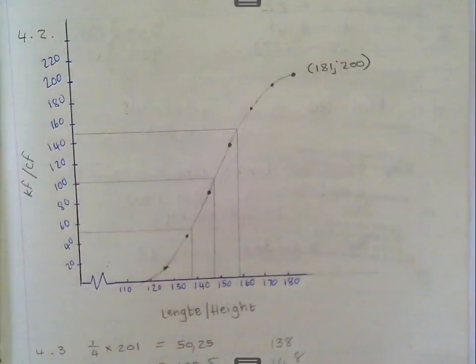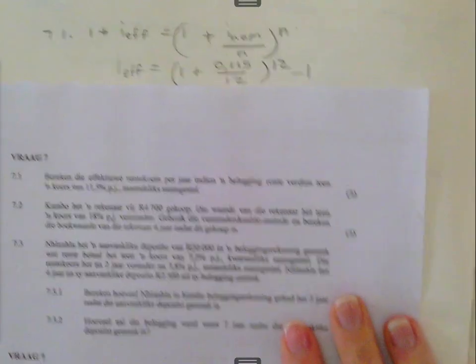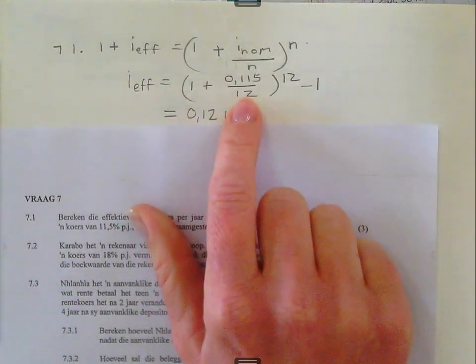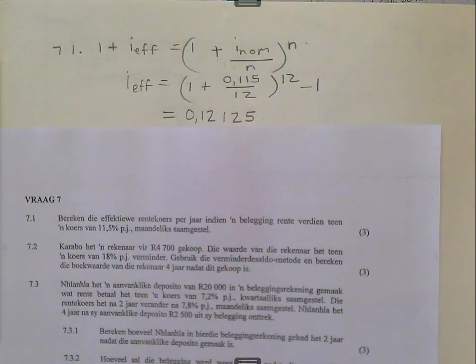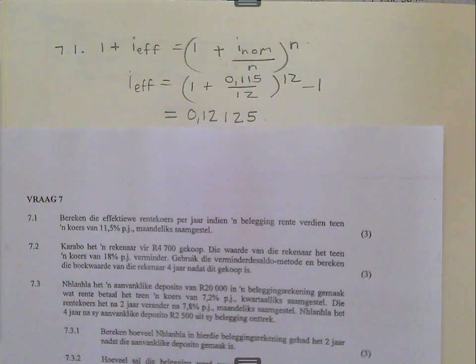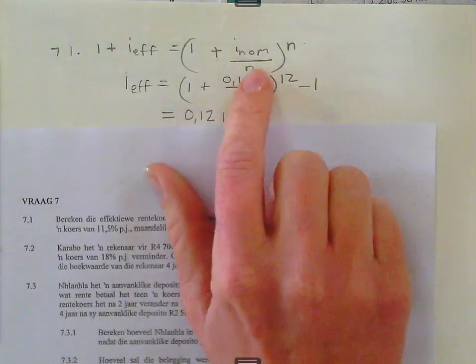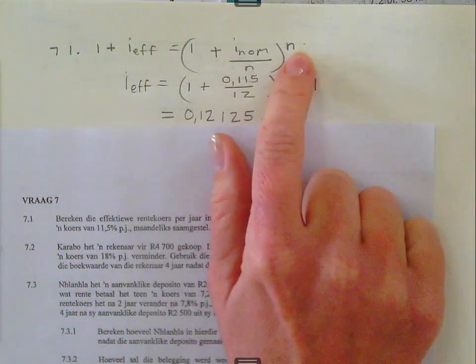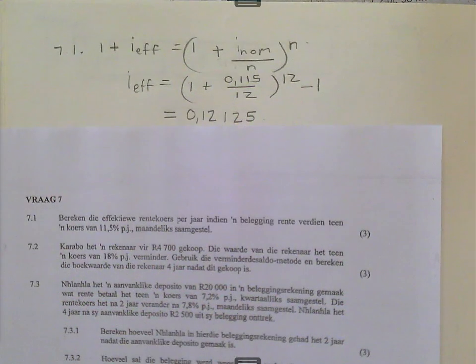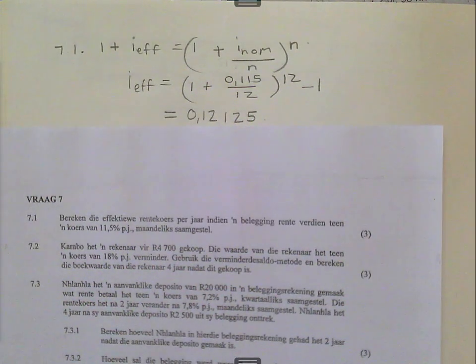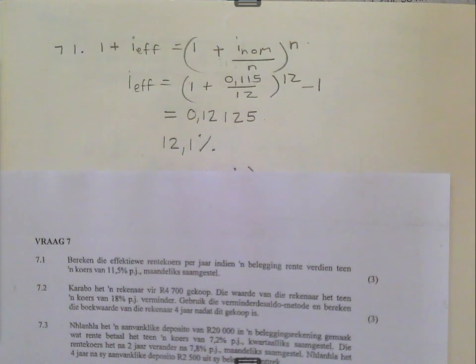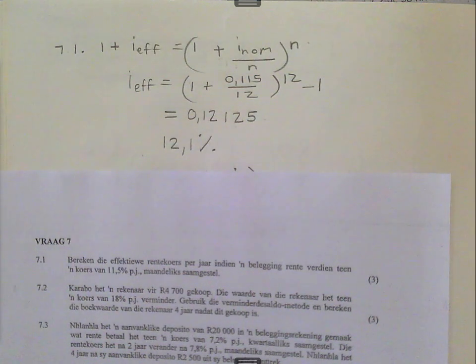Okay. So, the first question, they gave you the nominal rate of 11.5%, compounded monthly, and they want to know what is it effectively. So, you just substitute into the formula, remember, with nominal and effective, the number of years do not play a role. You just want to find out what is it actually worth per year. So, don't confuse that n dividing with n into the power of n with years multiplying with something. It's just the compoundings and the compoundings. And then when you calculate it, you get 0.12125. Do not forget that we still need to multiply it with 100. And then I get 12.1%. If you rounded it off to 12.13%, then that's fine as well.